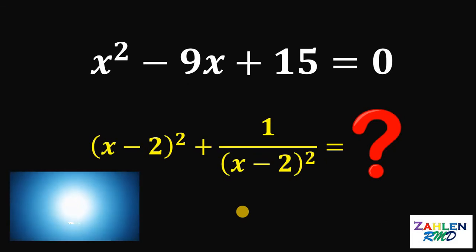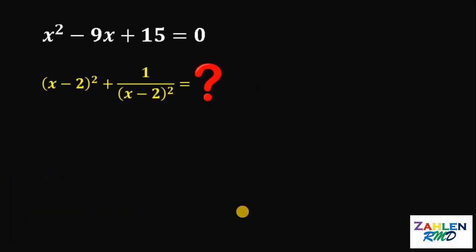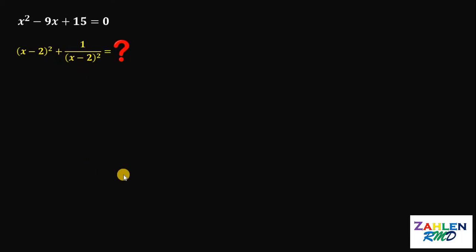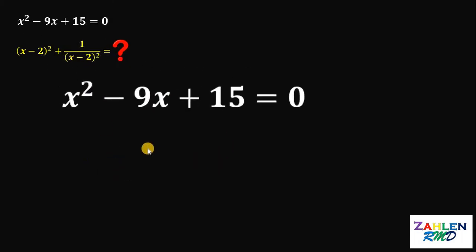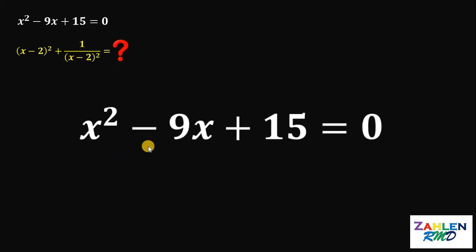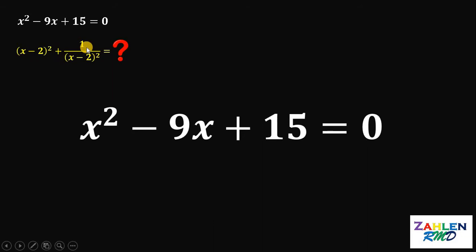Time's up. Let's answer this question together. Now let's have our given equation: x squared minus 9x plus 15 equals 0. And we want the value of x minus 2 quantity squared plus 1 over x minus 2 quantity squared.